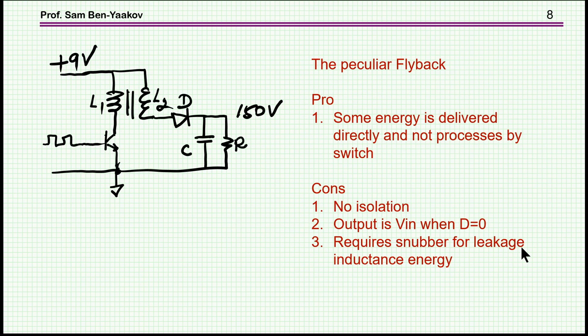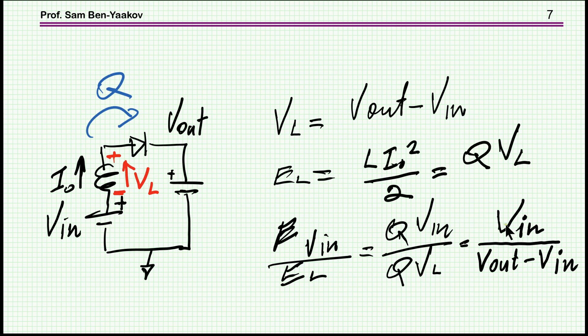So what are the characteristics of this sort of peculiar flyback converter? On the pro side, we can say that some energy is coming from the input and not processed by the switch. That is, energy is coming this way and not through here and then being passed. And this will reduce losses. However, it depends on the ratio between V_in and the difference here.